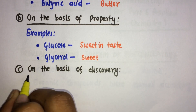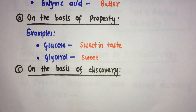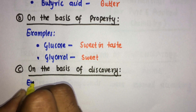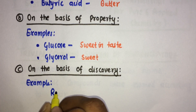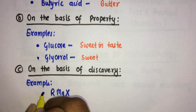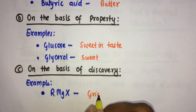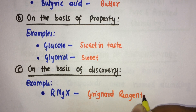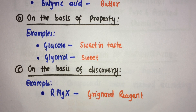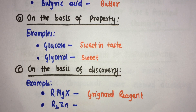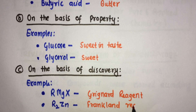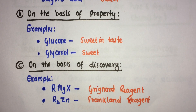On the basis of discovery, some organic compounds are named after the scientist who discovered them. For example, RMgX is named Grignard reagent after the scientist Grignard, and R₂Zn is named after Frankland as Frankland reagent.